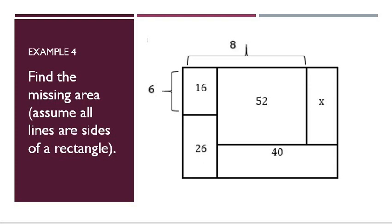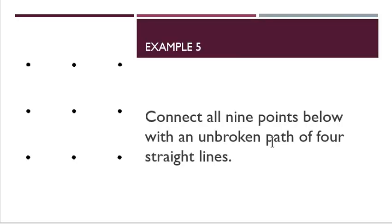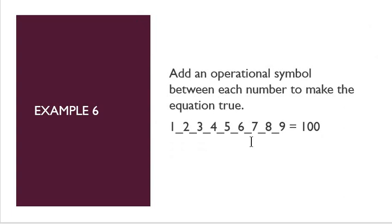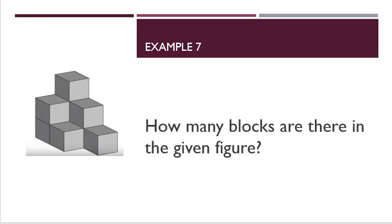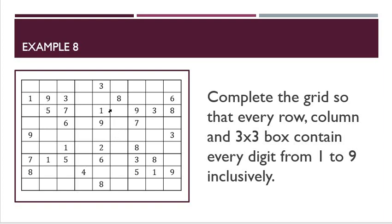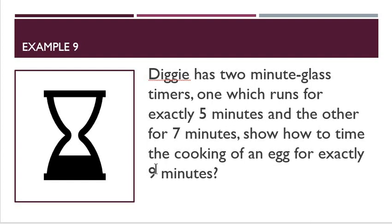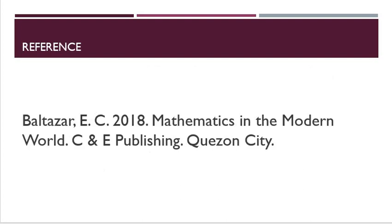That ends our lecture. As usual, we have plenty of examples for you. You're asked to find an area, connect nine dots using only four lines, put operational symbols to make an expression equal to 100, count blocks, complete a Sudoku so every three-by-three square has the numbers 1 to 9, and a timer problem similar to the 30-liter and 50-liter water problem. I hope you learned something. Here's our reference, and as always, just ask questions to your teacher. Goodbye.